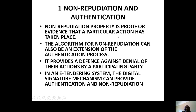Non-repudiation properties prove that something has happened — that this action has taken place. That requirement must be there. The programs for non-repudiation can also be an extension of authentication. Non-repudiation provides the difference between denial of an action by a participating party. But when you authenticate, there's no way out. The digital signature — at times you use your fingers when buying medicine in pharmacies — that's authentication. You can provide authentication and non-repudiation, meaning the action has taken place. You can't cheat, because there are these processes which you have to go through.